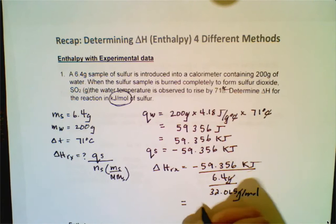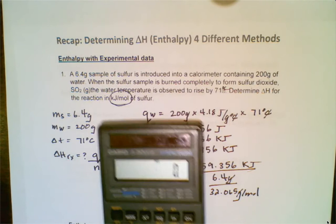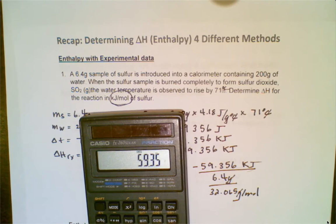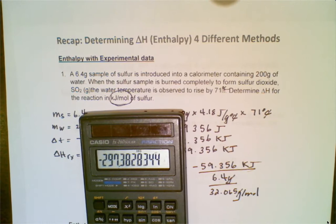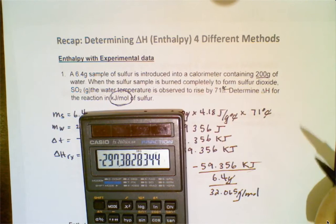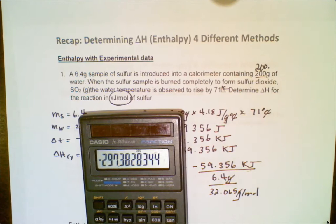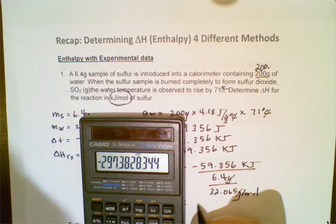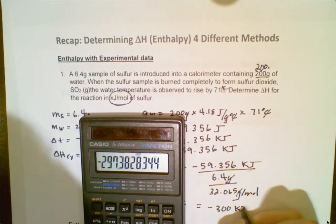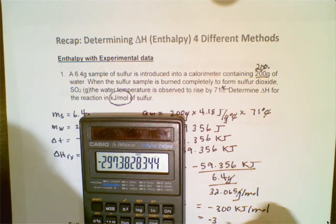I'll show you how I would enter that on my calculator: I do 59.356 divided by (6.4 divided by 32.065). When I look at significant figures, I actually only have one sig fig in 6.4. If there were a decimal there I'd have three sig figs, but that's only one significant digit. So I report that as negative 300 kilojoules per mole, or negative 3 times 10 to the 2 kilojoules per mole.